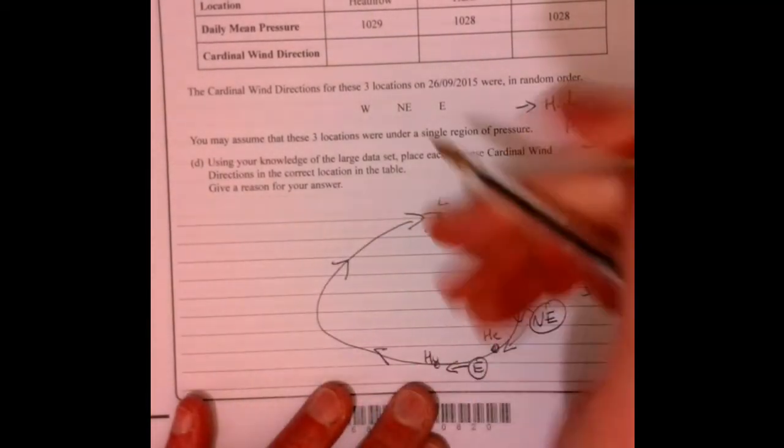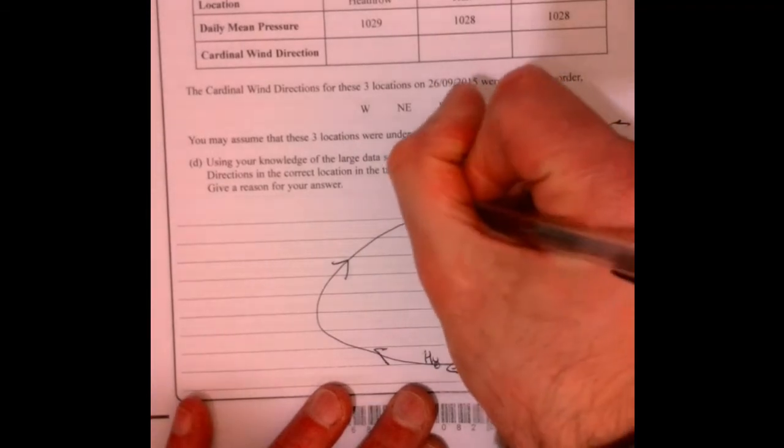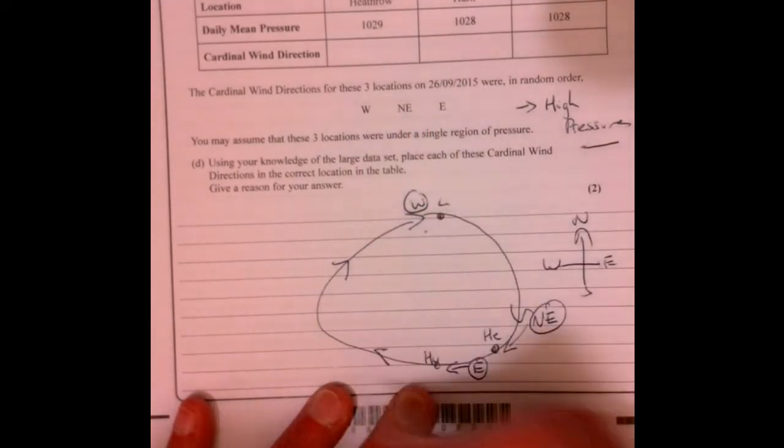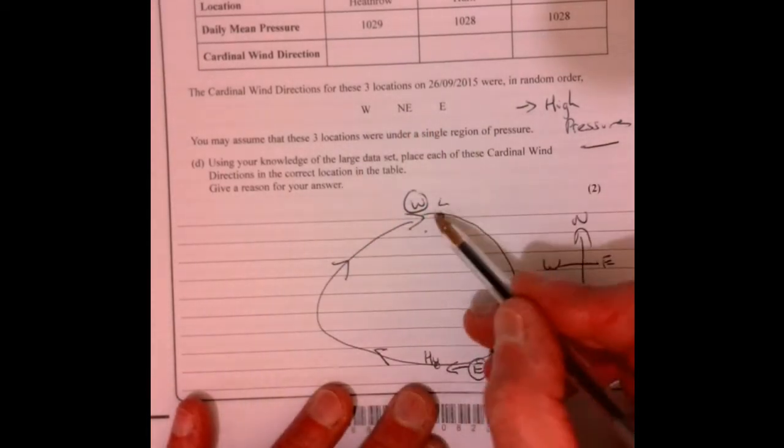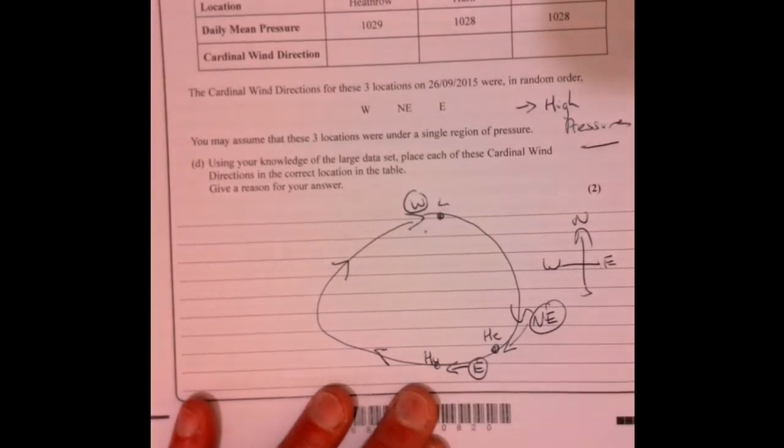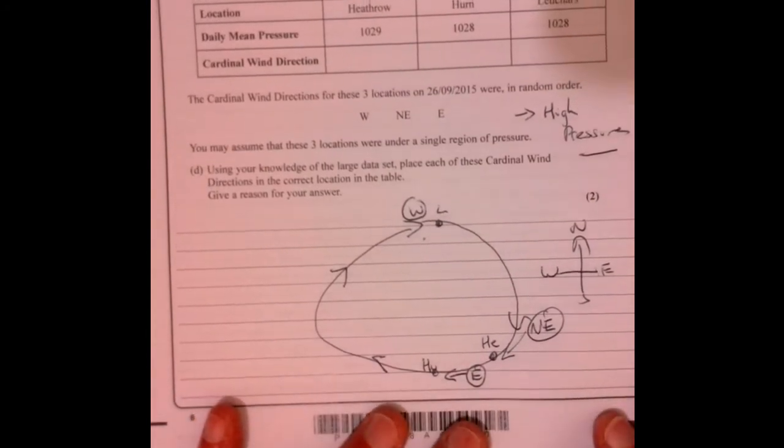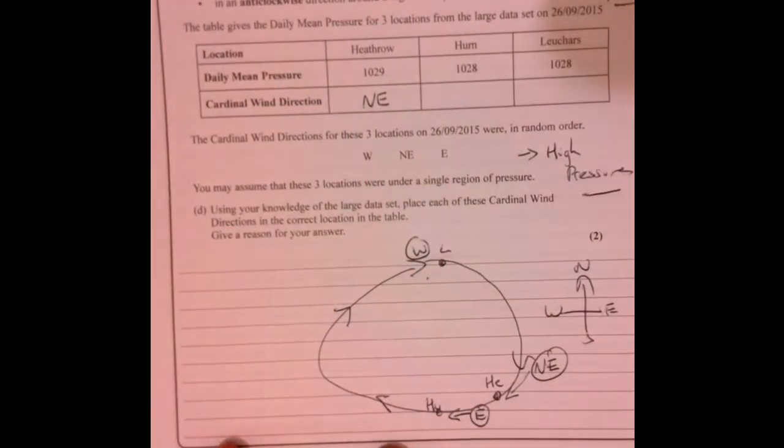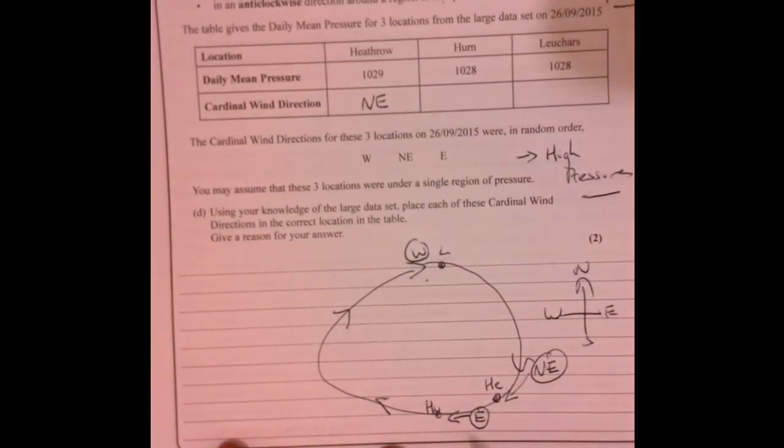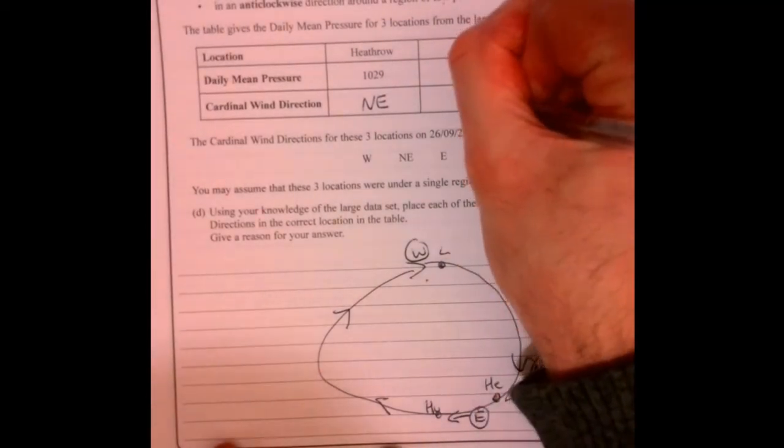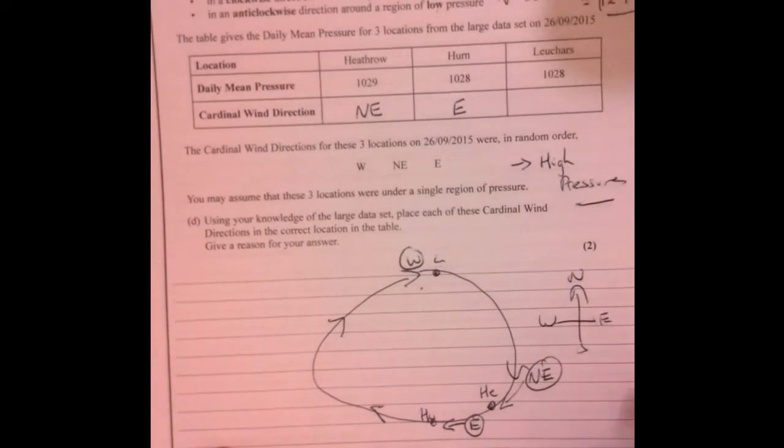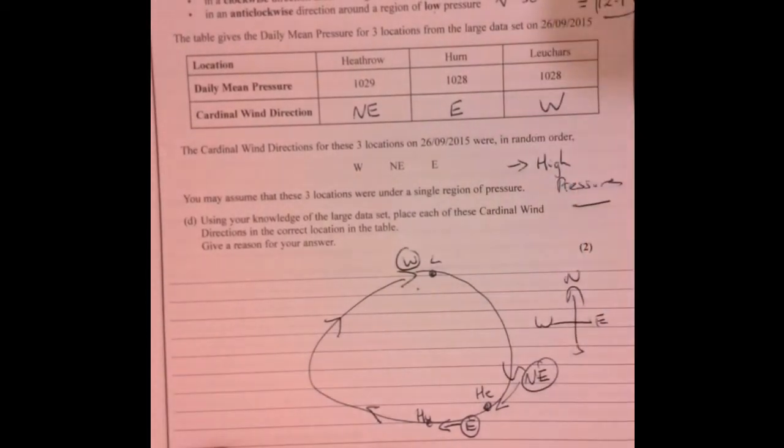That's going to loop up around and then the one up here, the wind is coming from the west. All right, so you've got these three here. You obviously need to know roughly where those places are, otherwise you can be a little bit stuck there. So what do we got? We've got Heathrow, the wind is generally coming from the northeast direction. From Herne it's going to be coming from the east, and the last location it's going to be coming from the west.